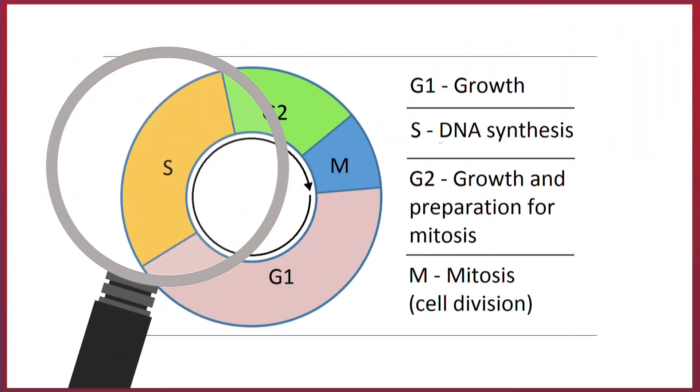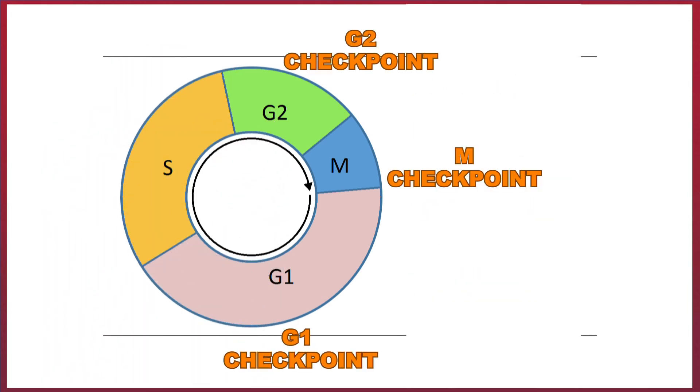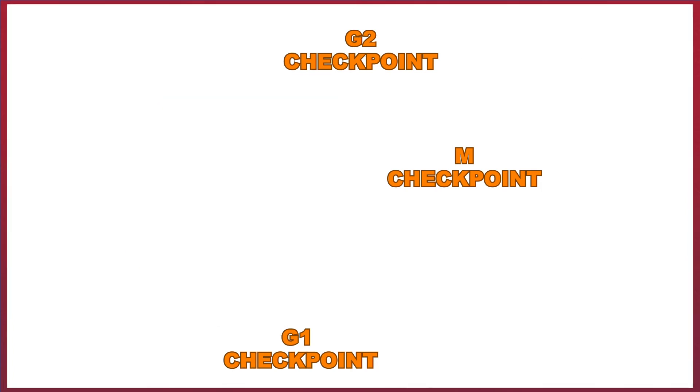These viruses can only be replicated if the cell is in the S phase of mitosis, and as such, some of these DNA viruses can manipulate the cell cycle checkpoints, later causing cancer. Not exactly the superpowers we were hoping for.